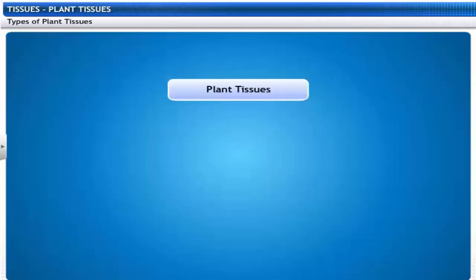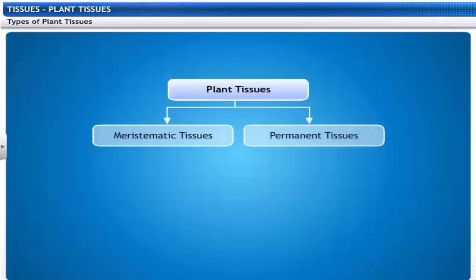These are the different types of plant tissues: meristematic and permanent tissues.